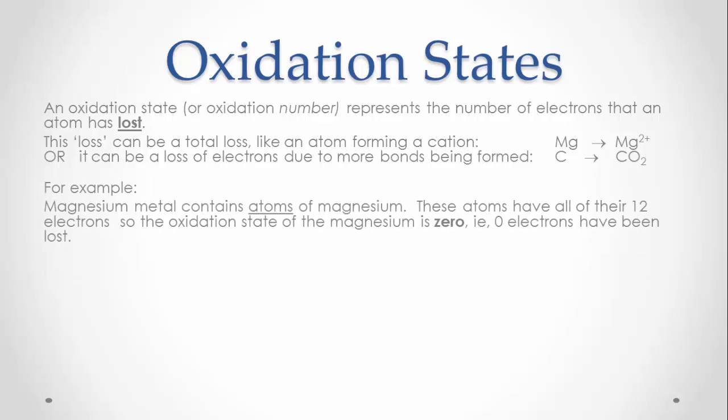For example, magnesium metal contains atoms of magnesium. These atoms have all of their twelve electrons, so the oxidation state of the magnesium will be zero — that is, zero electrons have been lost.